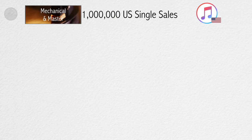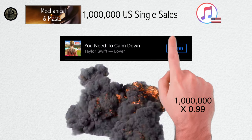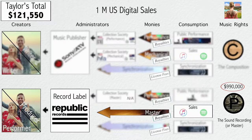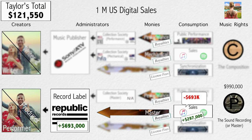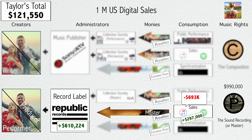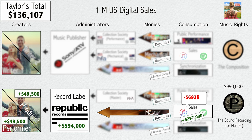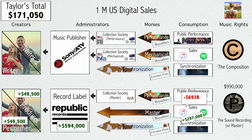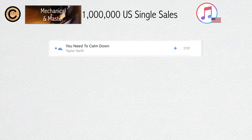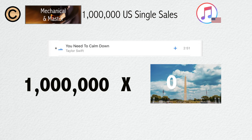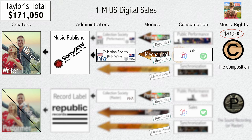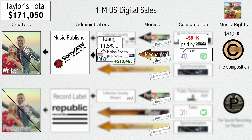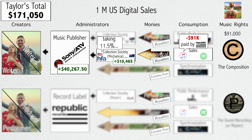1 million single sales on iTunes at $0.99 will generate $990,000. iTunes takes their 30% cut, and the label takes the rest. For master royalties payments, the label will typically pay the artist about 10% of this wholesale price, divided between Swift and her producer — totaling $49,500 each. For publishing, the song is under 5 minutes, so 1 million sales multiplied by the statutory rate of $0.091 equals $91,000. The Harry Fox Agency takes their cut, the publisher takes half, and the writers split the rest.